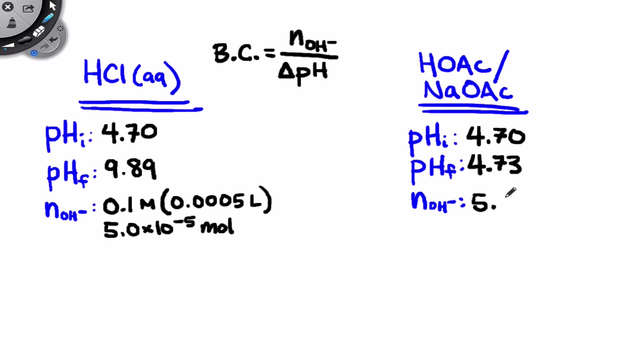The delta pH in the HCl case is relatively large. It's 9.89 minus 4.70, which comes out to 5.19, and it's much smaller over here in the buffer case. Delta pH here is a very, very tiny 0.03 pH units.